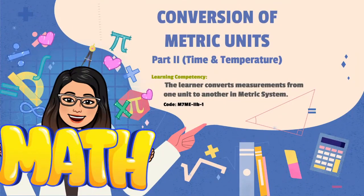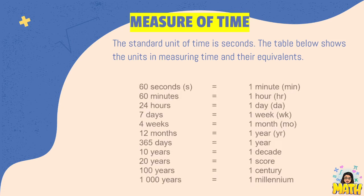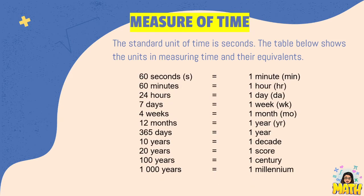Welcome to part 2 of conversion of metric units. This time we'll deal with conversion of measures about time and temperature. For the measures of time, the standard unit is seconds. The table below shows the units in measuring time and their equivalents.